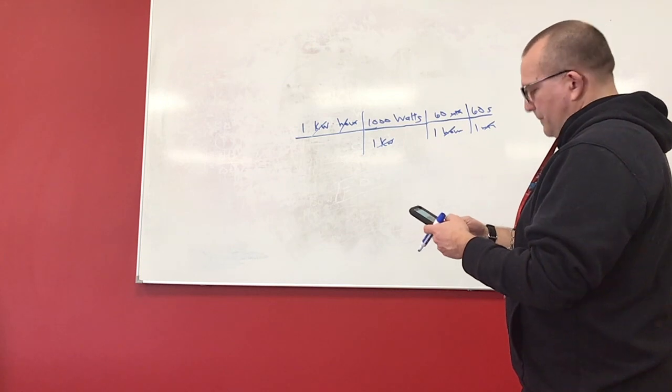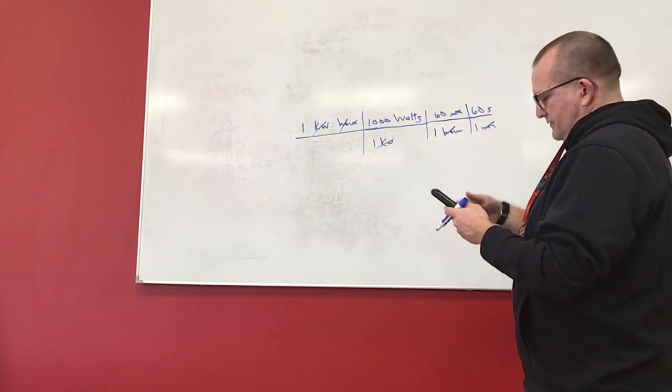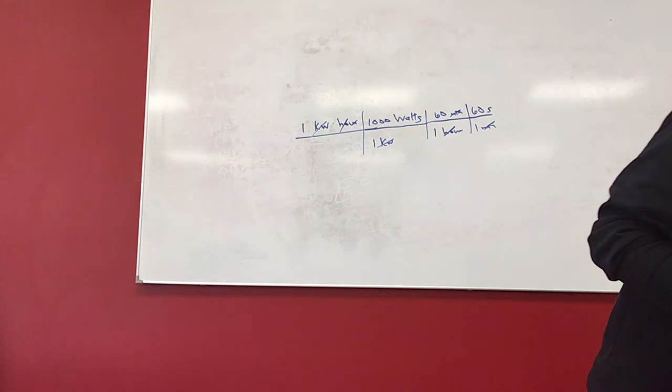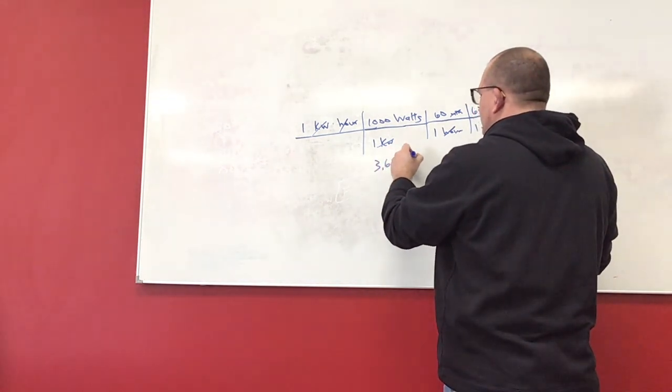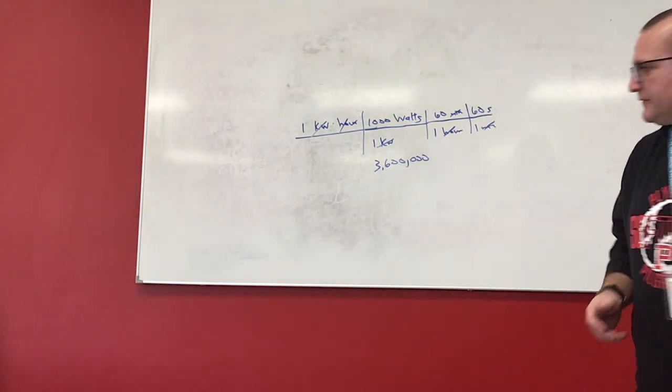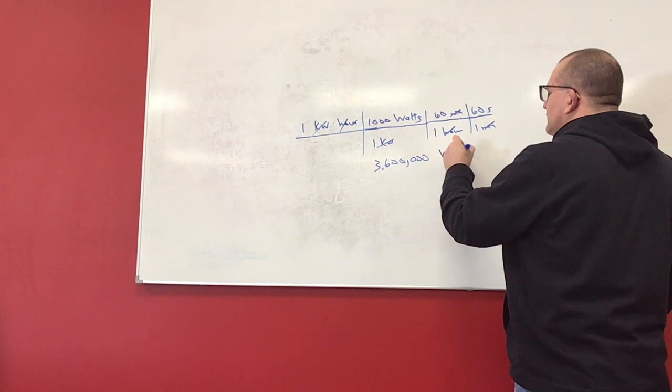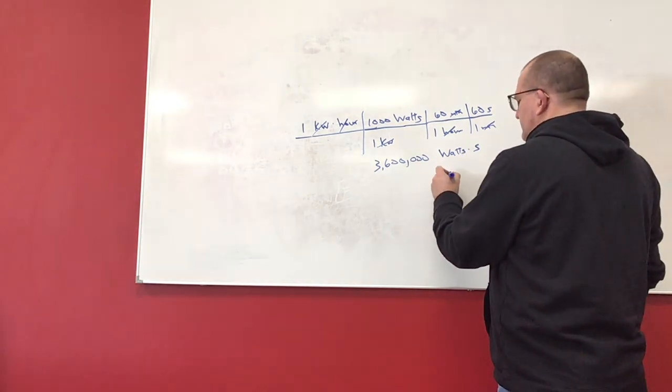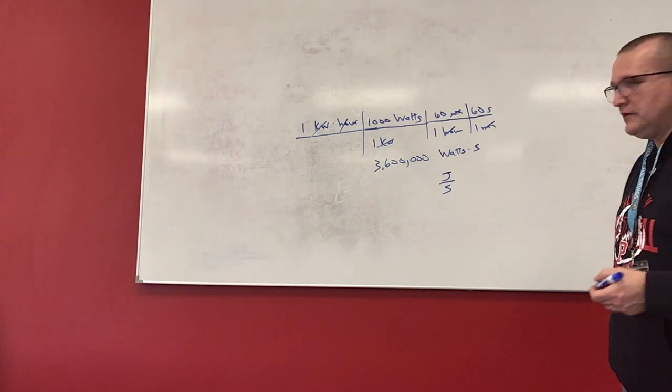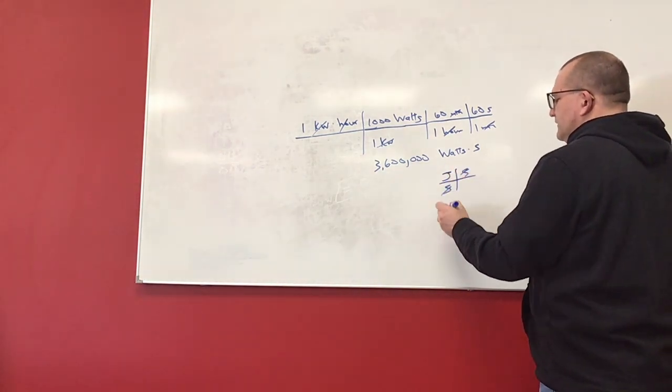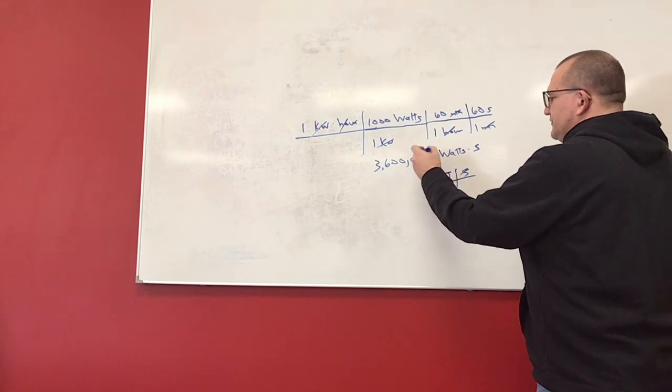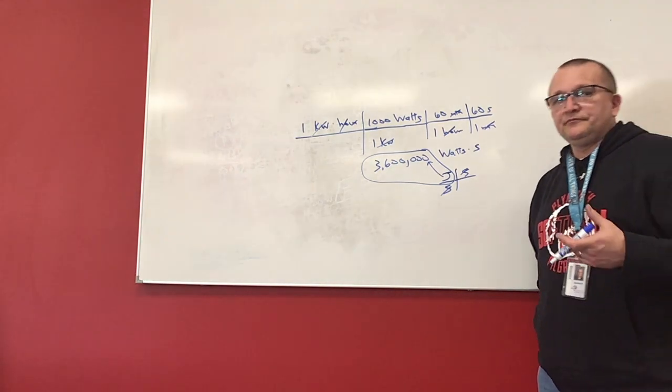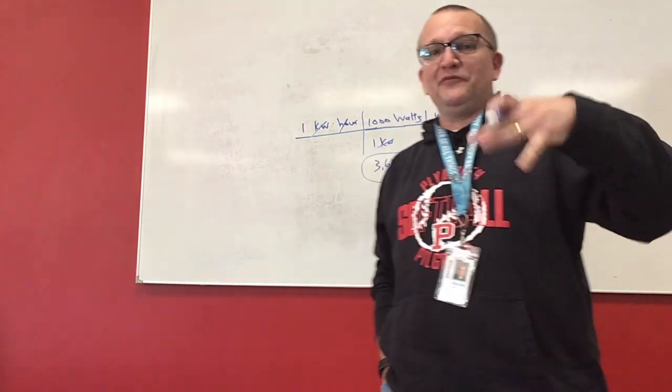So calculators up. I take 1,000 times 60 times 60, and I get a really big number. I get 3 million 600 thousand watt-seconds. Now, is that energy units? Well, a watt is a joule per second, and then if I multiply that by seconds, it cancels out, leaves me with joules. So a watt-second is the same as a joule. But one kilowatt hour is 3.6 million joules. That's a lot of energy. We could keep converting and find some other things if we need to, but that's where that number comes from.